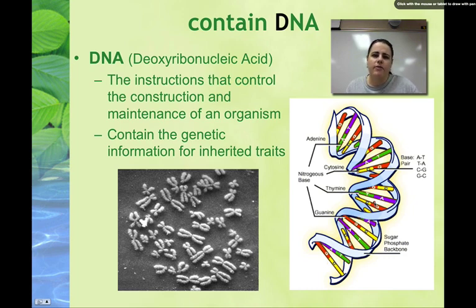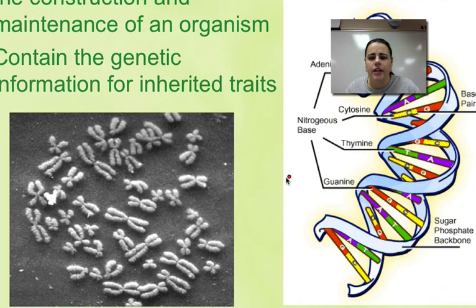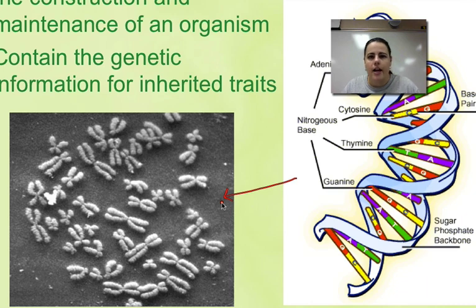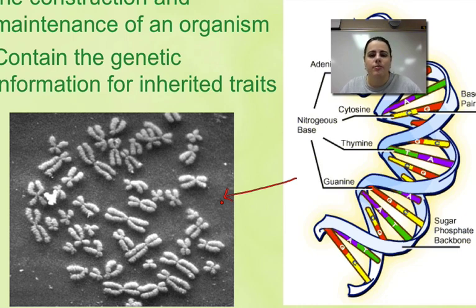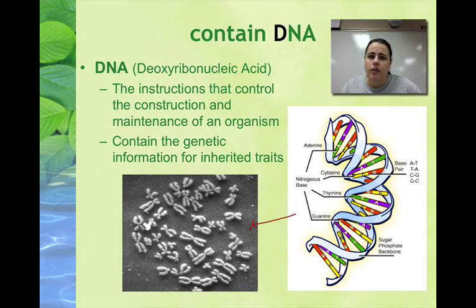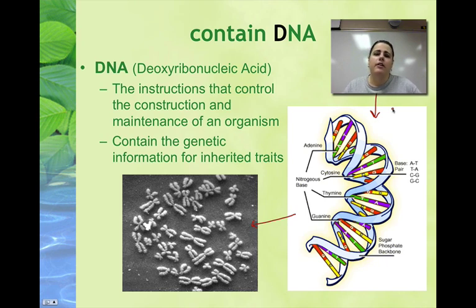DNA has five or six repeating parts that just repeat over and over. DNA is usually coiled up into structures called chromosomes. As humans, we have 46 chromosomes — half from mom and half from dad. All DNA in all organisms has this same structure, whether it's a bacteria, an ant, an elephant, or you. That's amazing.